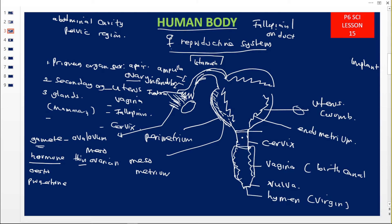This diagram shows the female reproductive system. The upper part of the uterus is called the fundus — as you see it here, it is the upper domed part, and it extends as an extension to connect to the second ovary because there are two ovaries — they are in a pair.